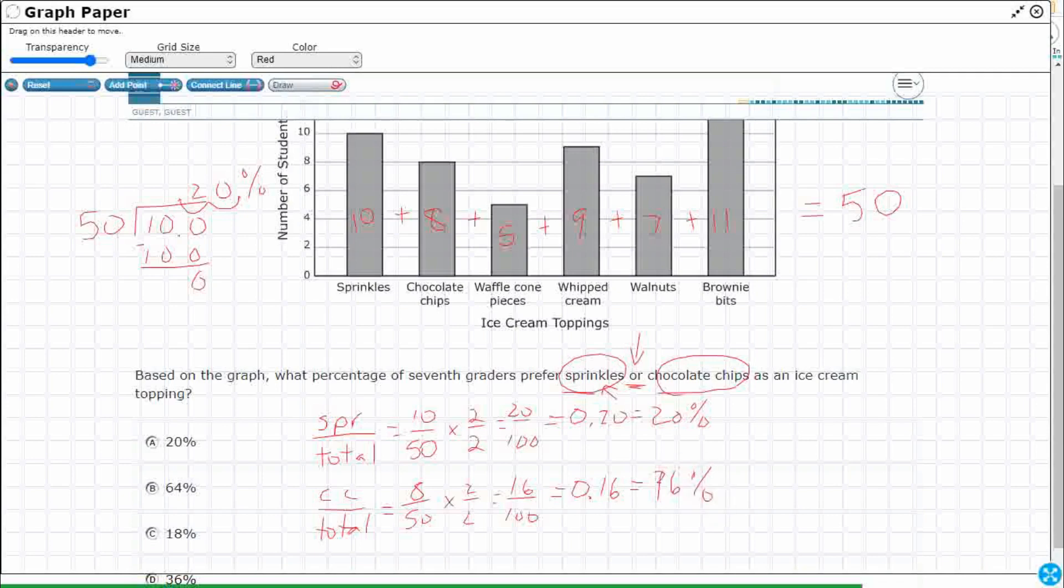Now 20 percent is an option here. 16 percent is not an option but that's fine because it's sprinkles or chocolate chips. When you see this 'or' as a connector you actually need to add these two together. 'Or' when we're looking at graphs and trying to interpret it is actually a connector that adds these two possibilities together.